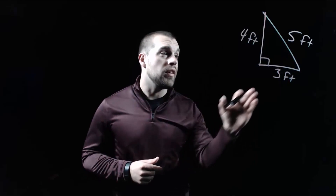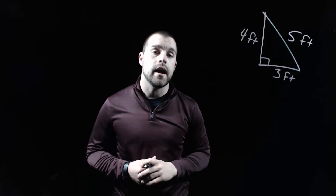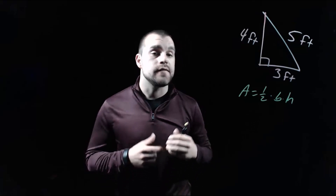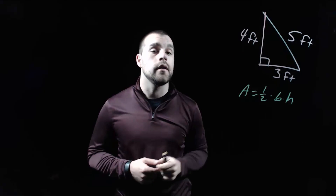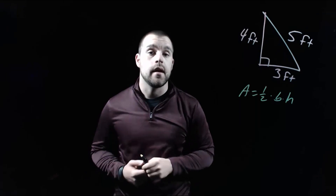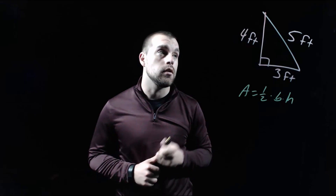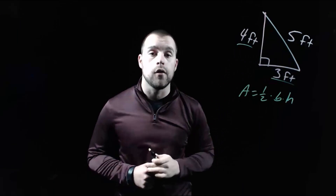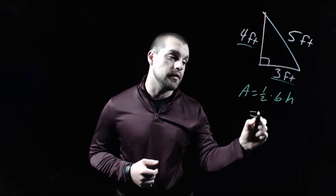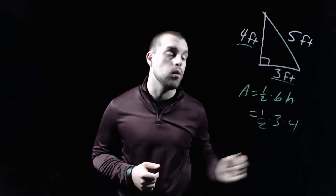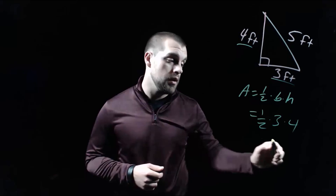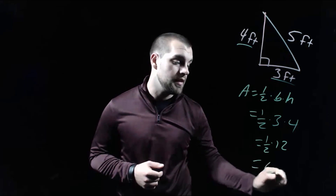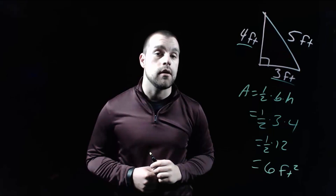In this example we've got a 3-4-5 right triangle and we're going to find the area. Our formula is one half times the base times the height. We're given the length of all three sides, but remember the base and height have to be perpendicular to each other. The two sides that make a right angle are the three foot length and the four foot length, so we use those as our base and height. One half times 3 times 4 — three times four is 12, and 12 times a half gives us six feet squared as our area.